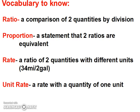Let's start with some vocabulary. A ratio is a comparison of two quantities by division. A proportion is a statement that two ratios are equivalent. A rate is a ratio of two quantities with different units, like 34 miles for every two gallons. A unit rate is a rate with a quantity of one unit, so miles per gallon — one unit.